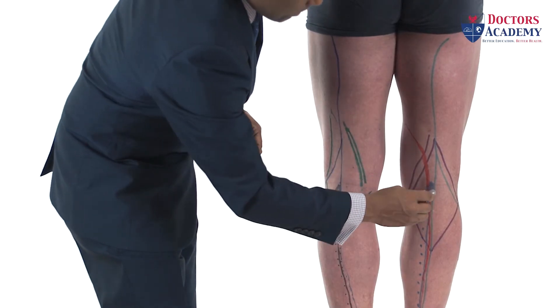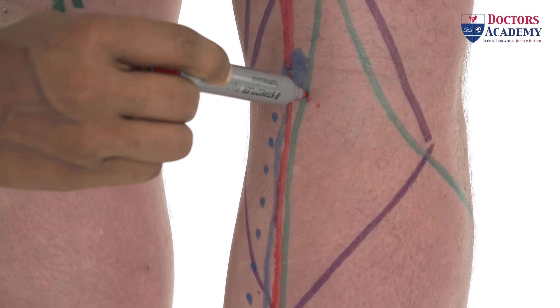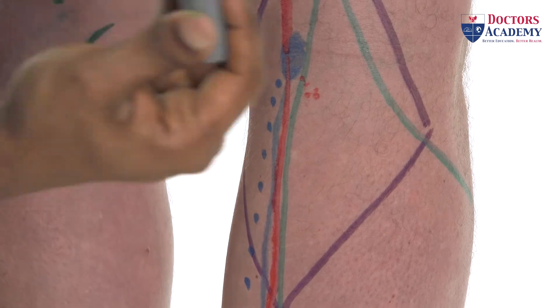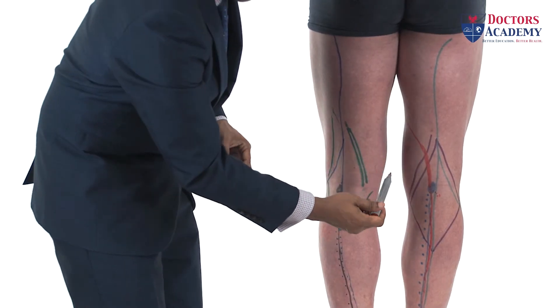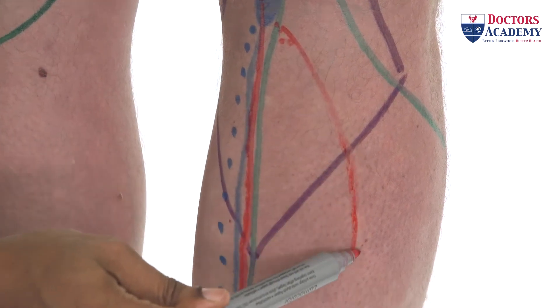The anterior tibial artery pierces the muscle down there and comes anterior, which we will show from the front. And a peroneal artery runs on the side of the peroneal compartment.